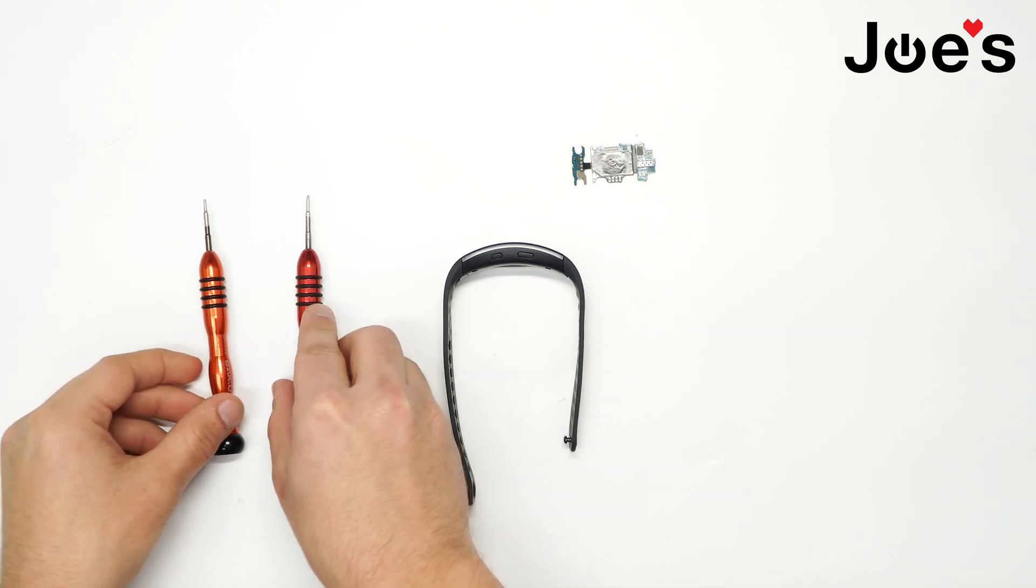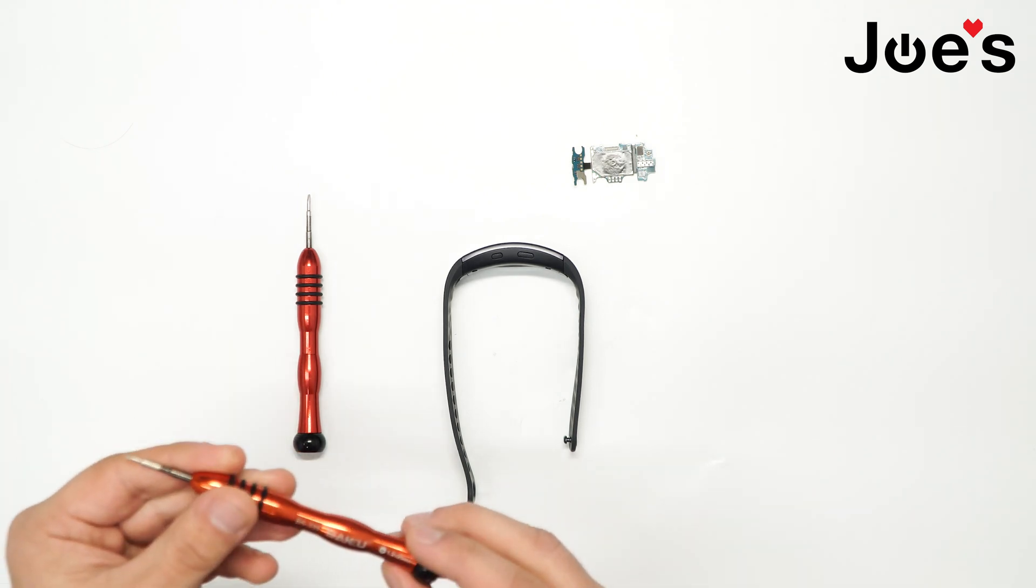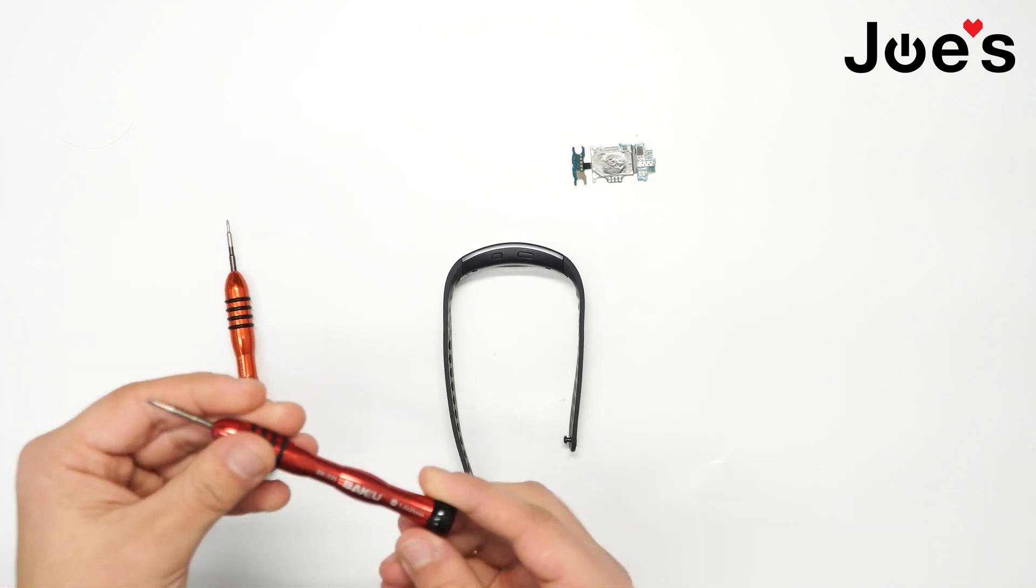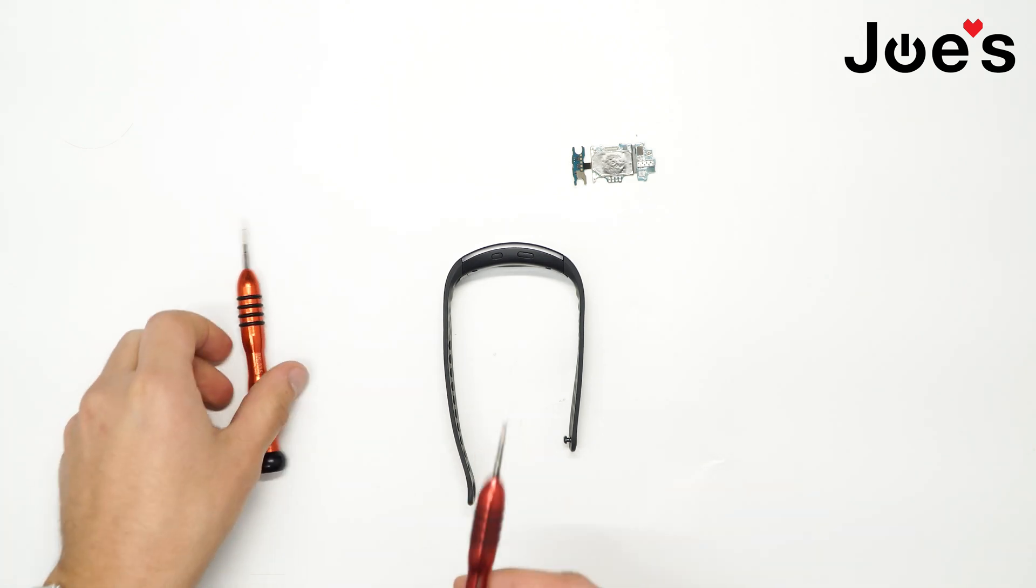Today I'll be showing you how to replace a Samsung Gear Fit 2 motherboard. Here's our replacement part. All replacement parts can be found in the description below. We're going to need a flathead and a Phillips screwdriver—the Phillips is 1.2 millimeter and the flathead is 1.5 millimeter, so we want smaller sizes since we're working with smaller components.